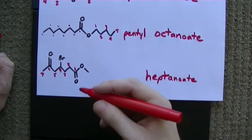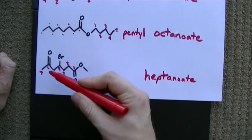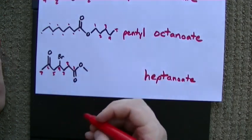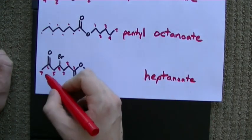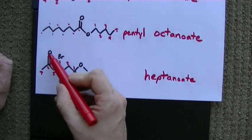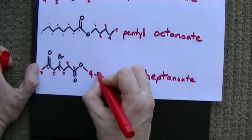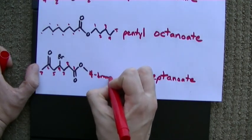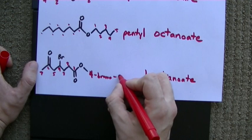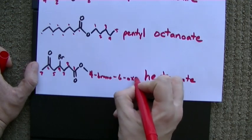Now, what you'll notice is that there are things hanging off of the heptanoate. It looks to me like, starting at carbon 6, we have an oxo group. And starting at carbon 4, we have a bromo group. You guys remember how we deal with substituents? 4-bromo-6-oxo-dash.